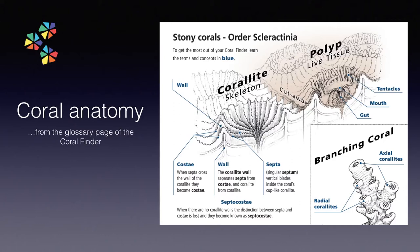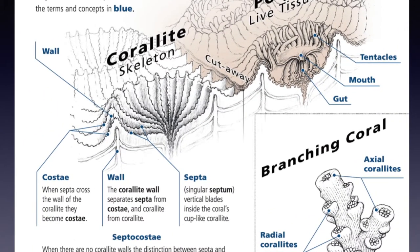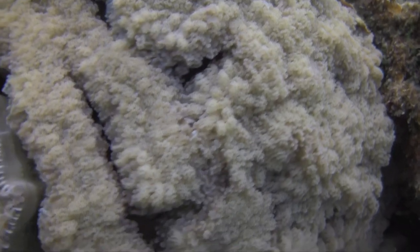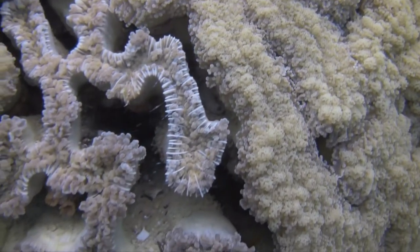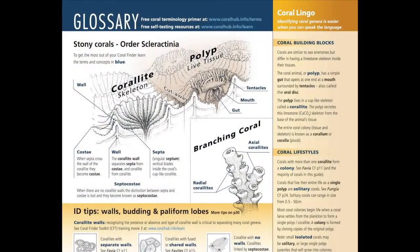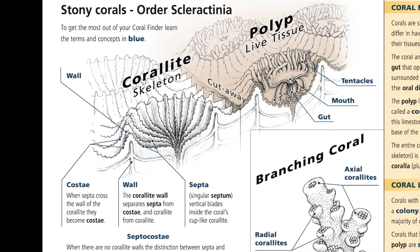This diagram is from the glossary page of your coral finder, which you should open up and follow along with. To use the coral finder effectively, you need to learn the terms in blue. These terms and concepts have been culled from hundreds in use by coral taxonomists, so it's a fairly painless way to start. The coral finder is the bridge between our underwater and topside experience of corals. Underwater, we see the tissue of the living animal, while topside, we can look at the bleached coral skeleton. The coral finder helps bring this all together. Once you learn these terms, you will be able to recognise around 70 genera.